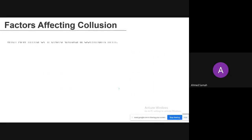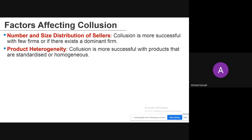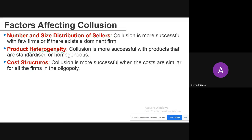Factors affecting collusion include: the number and size distribution of sellers — collusion is more successful with fewer firms and if there is a dominant firm; product heterogeneity — collusion is more successful with standardized or homogeneous products, as differentiated products make collusion more difficult; and cost structures — collusion is more successful when costs are similar for all firms, since a firm that can produce at much lower cost will not be incentivized to collude.